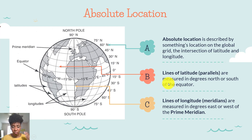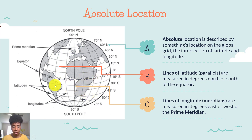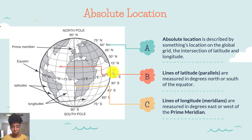One of those units of measurement is called lines of latitude, or parallels. They are measured in degrees from north to south. As you see here, this is 75 degrees north and it goes all the way down to the equator, which is zero degrees, and then south goes all the way down to 75 degrees south. Then you have lines of longitude, also called meridians, and those are measured from east to west from the prime meridian — the zero degree line right here. So you would have 15 degrees west, 30 degrees west, 45 degrees west, and so on, and the same thing for east. Absolute location is the exact precise location based on the global grid.